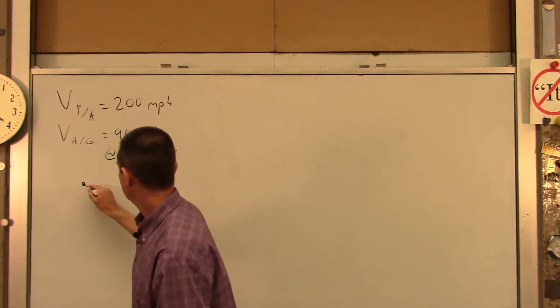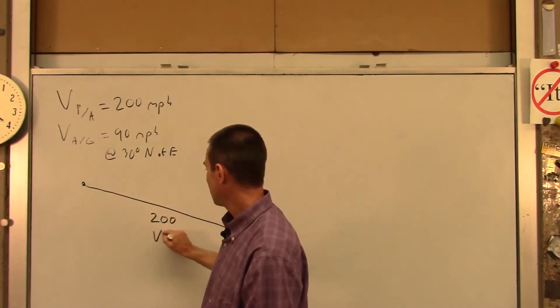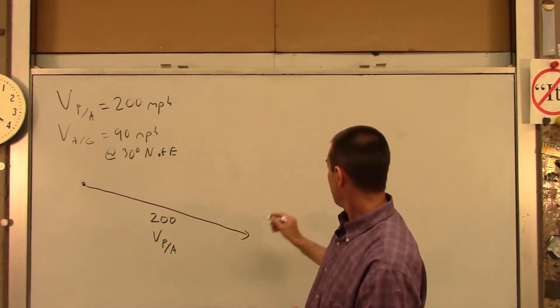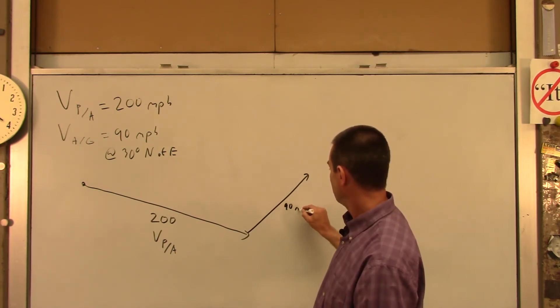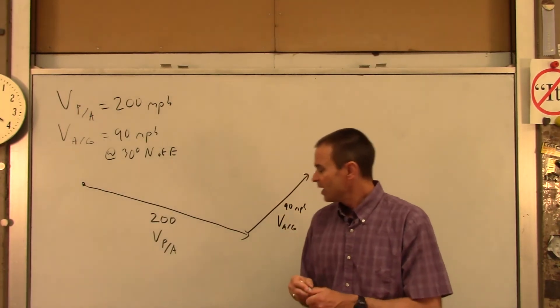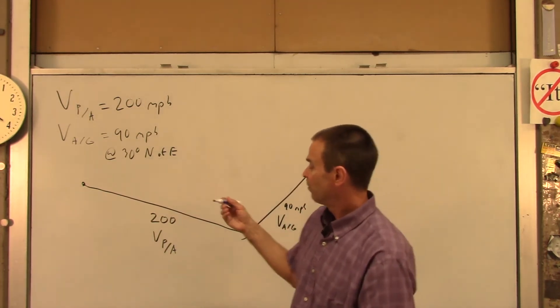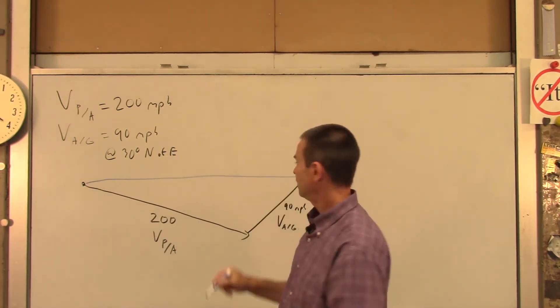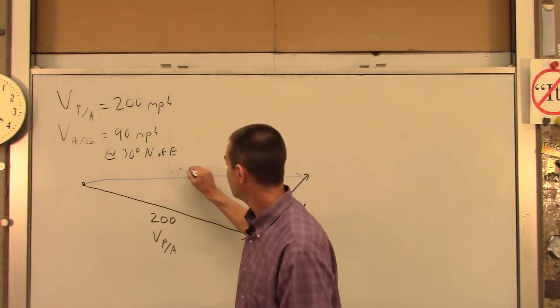So the pilot is going to face this way somewhat. And we know that that is 200, that's the velocity of the plane with respect to the air in miles per hour. We also have a wind blowing like that, and that's 90 miles per hour, and that's the velocity of the air with respect to the ground. I want those two vectors to add up such that the pilot's velocity relative to the ground is due east. That's the velocity of the plane with respect to the ground.